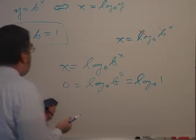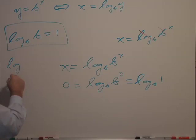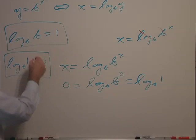So, here we have another logarithm property. The log of 1 base b is equal to 0.